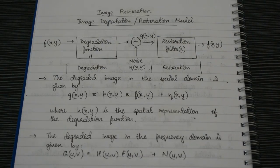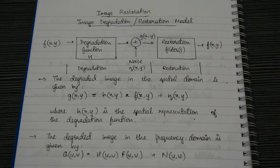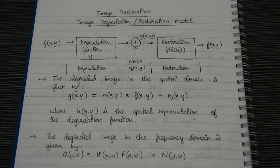Restoration basically attempts to recover an image that has been degraded by using prior knowledge of the degradation phenomena. There are different techniques for image restoration: if the degradation is due to additive noise, we use spatial filters. But if the degradation is due to image blur, it becomes difficult to remove it with spatial filters, so we use frequency domain filters.